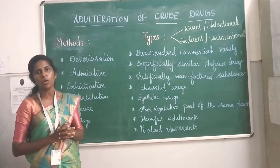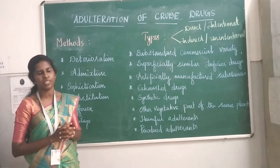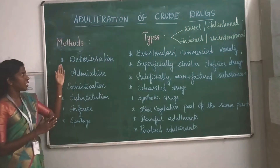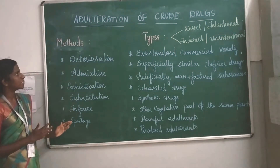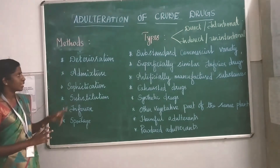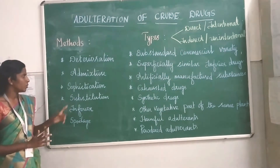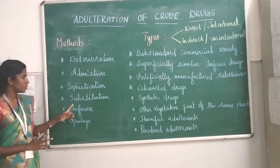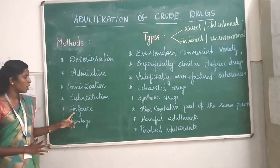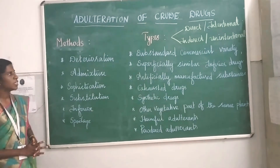Now we will see what are the methods of adulteration. The methods are: deterioration, admixture, sophistication, substitution, inferior, and spoilage.